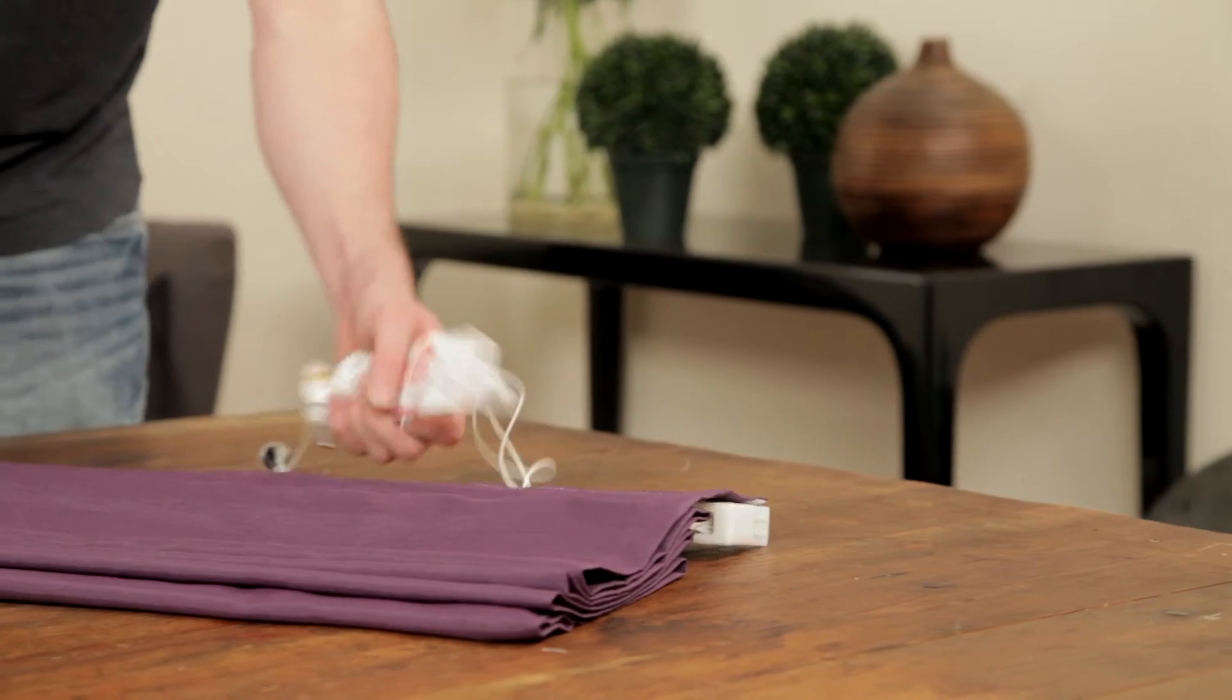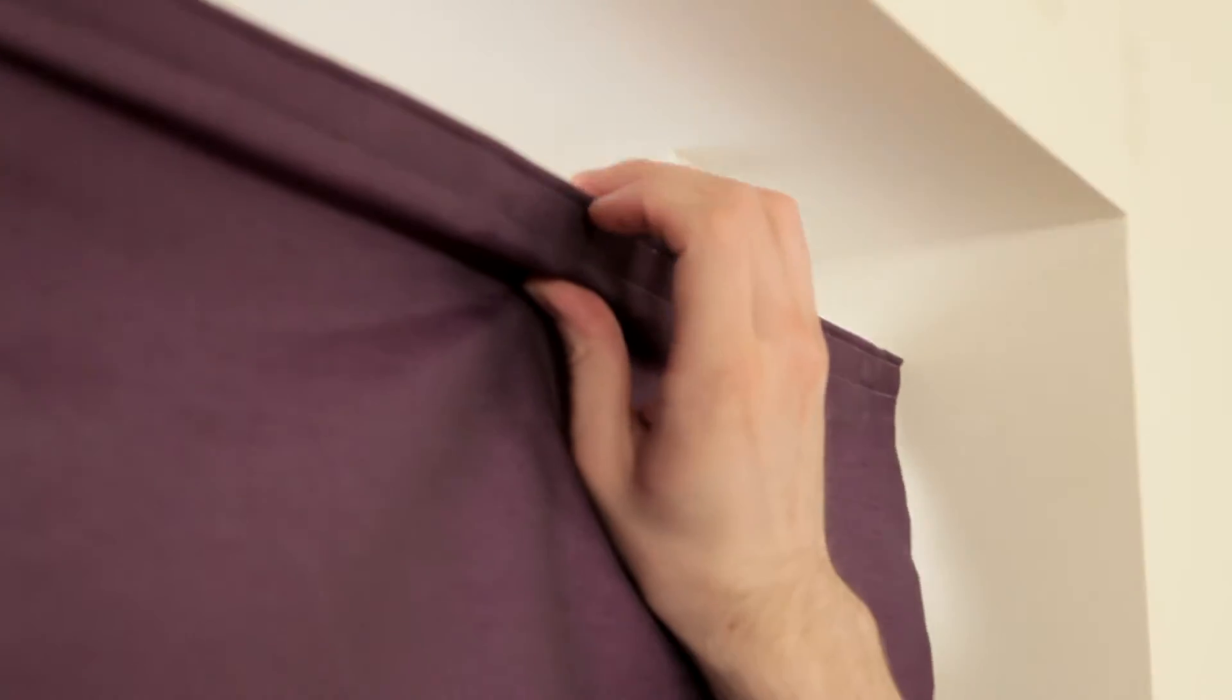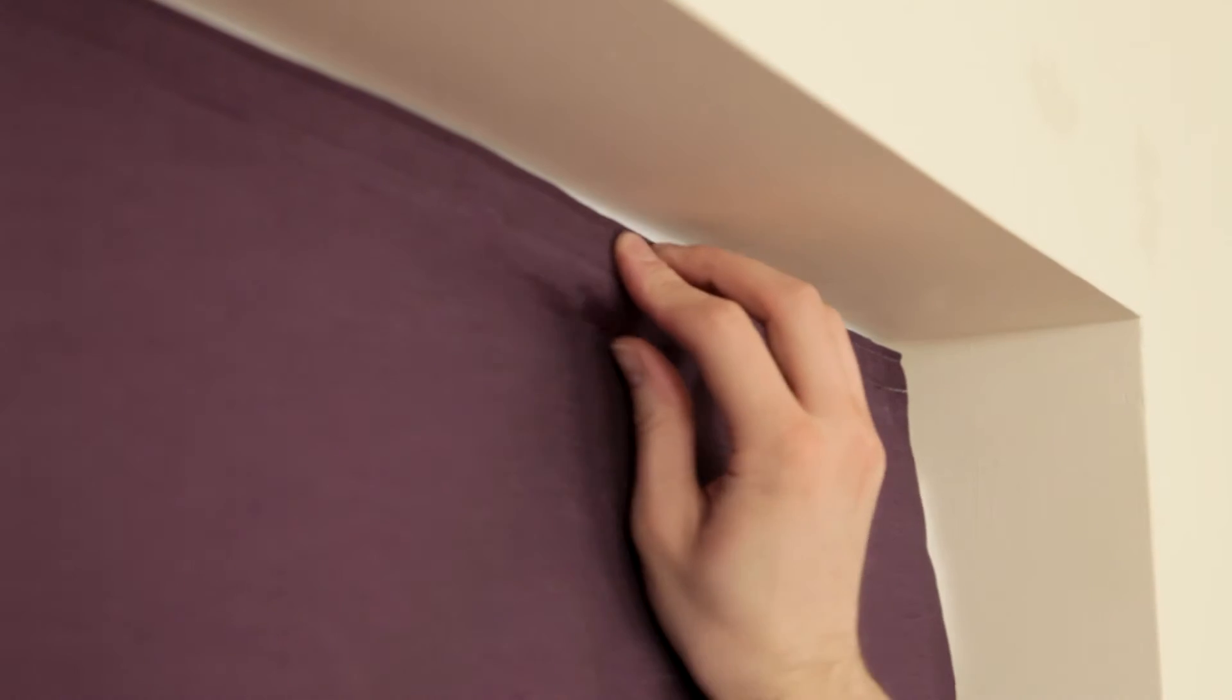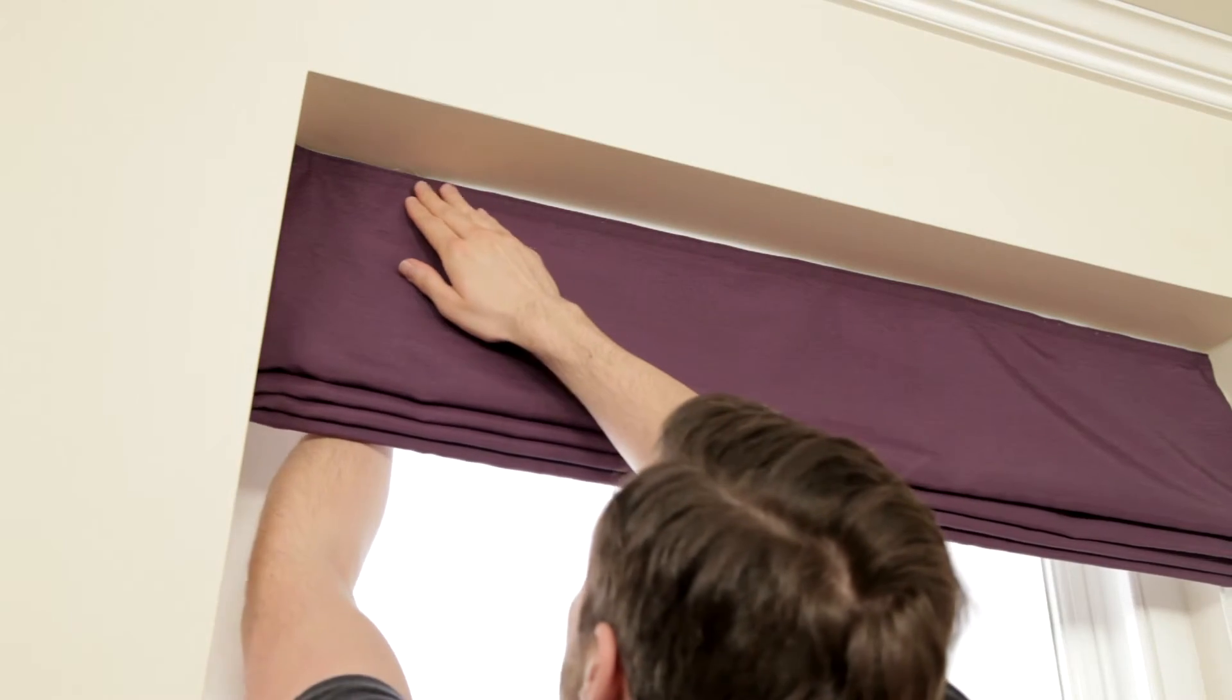With our speedy headrail brackets, securing your blinds is easy. Rest the top lip of the headrail on the top support of the bracket. Then push the bottom lip back until it clicks into place.